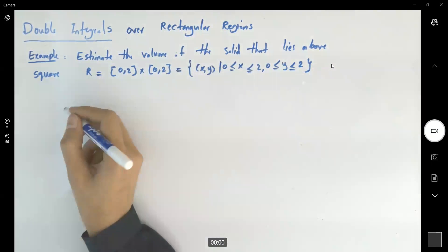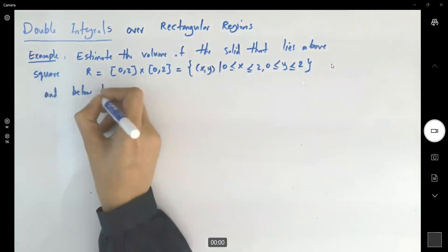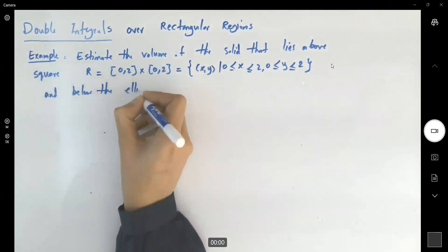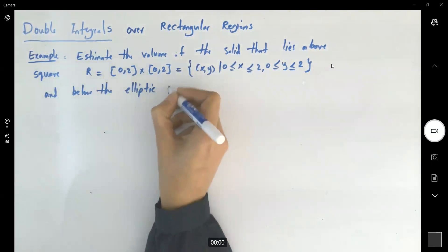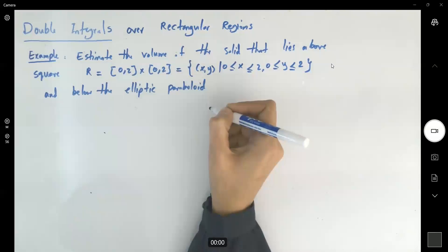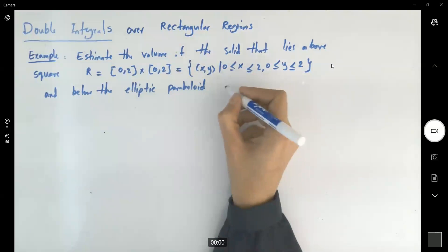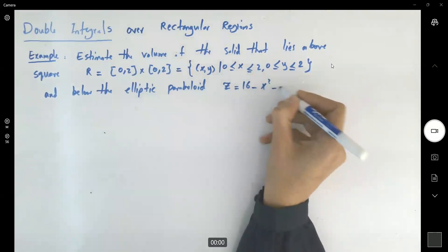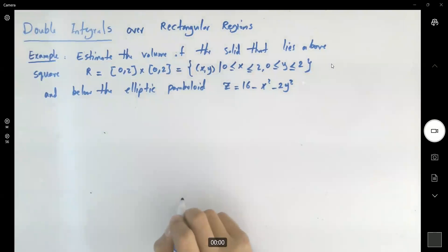And below the elliptic paraboloid, which is given to us as z equals to 16 minus x squared minus 2y squared.